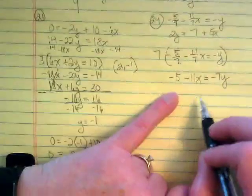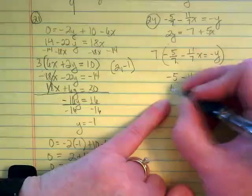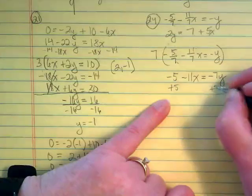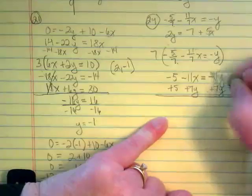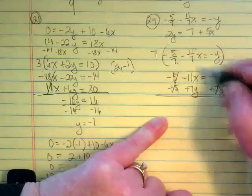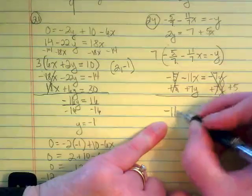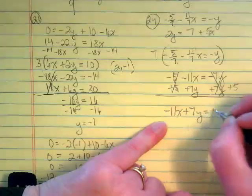Now I want to get that equation into the right form. The negative 5 is on the wrong side. And the 7y is on the wrong side. So this is going to get zeroed out leaving positive 5. This is going to get zeroed out leaving these two terms. So this would be rewritten as negative 11x plus 7y equals 5.